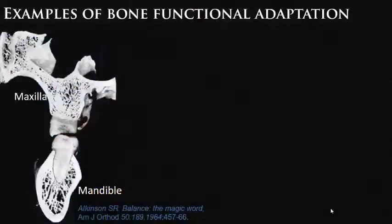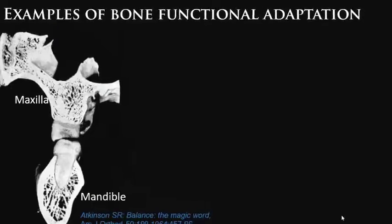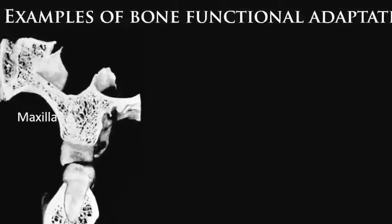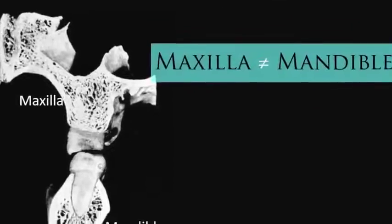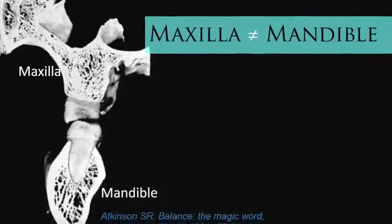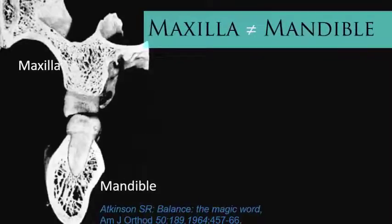It is important to emphasize that this law applies to any bone in the body. Therefore, this principle could not be different concerning craniofacial bones. When we compare the maxilla and the mandible, for example, we know that the maxilla transmits the impact of masticatory forces to the other parts of the skull. So its cortices and trabeculae are thinner than in the mandible, which has thicker cortices and trabeculae, allowing these bones to receive a greater impact from masticatory forces.